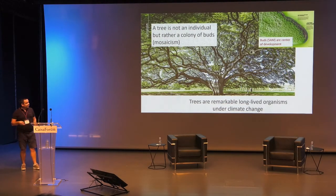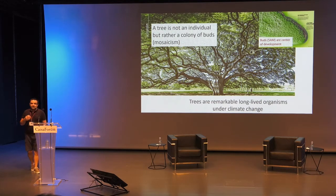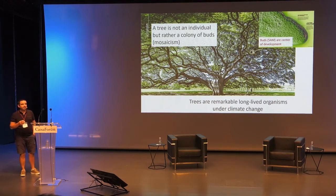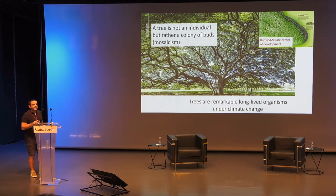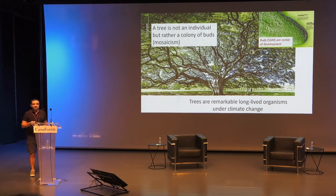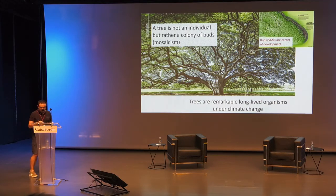As we heard from Carlos Herrera on the first day, we know that plants are sometimes seen as mosaics, and trees are a very nice example because we can consider that trees are more a colony of buds than an individual. The bud — the shoot apical meristem — is a center of morphogenesis. So we have a very interesting biological system with trees that are long-living organisms that will have to adapt to climate change.